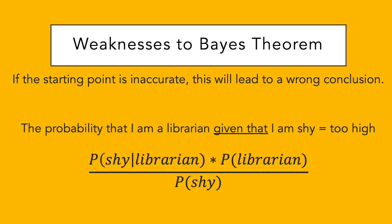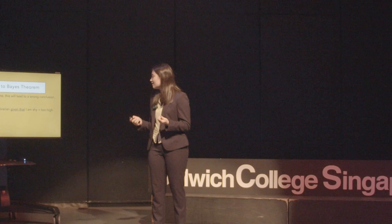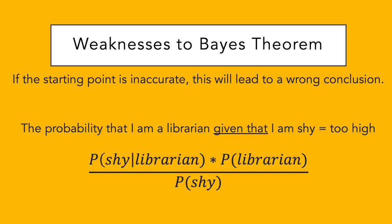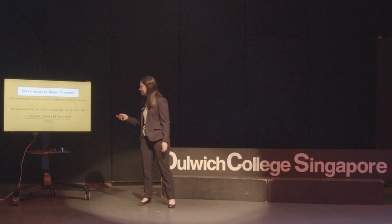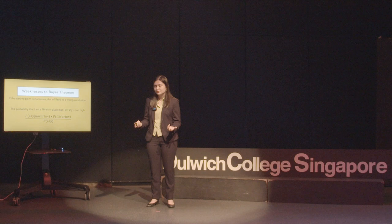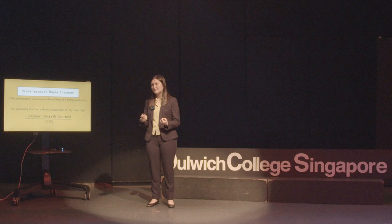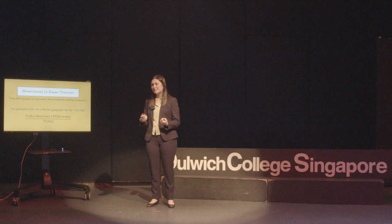There is one weakness to Bayes theorem that I want to discuss, so please be careful before applying this to your everyday life. If your starting point is relatively inaccurate, this will lead to a wrong conclusion. For example, going back to the librarian-farmer-shy example: if I think there is a greater proportion of librarians who are shy, or if I think there's a huge number of librarians in the world, then the probability will be super inflated and way too high. In real life, this means we could inflate or deflate the probability of something happening just because of our own bias.